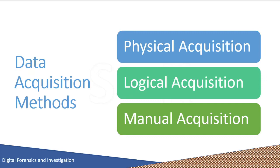Physical acquisition of a mobile device is a bit-by-bit copy of the physical storage, similar to computer forensics. Physical extraction acquires information by direct access to the flash memory — a non-volatile memory primarily used in memory cards and USB flash drives as solid-state storage. The process creates a bit-by-bit copy of the entire file system. Physical acquisition is able to acquire all data present on the device including deleted files and access to unallocated space on most mobile devices.